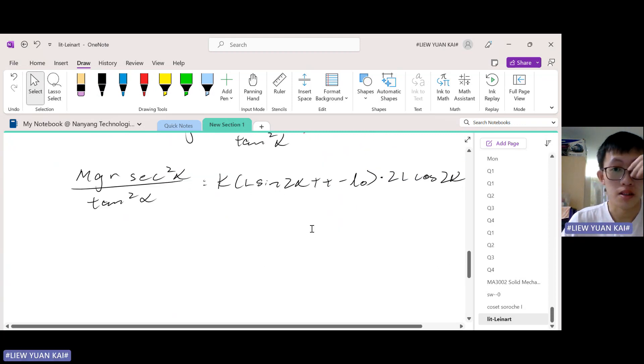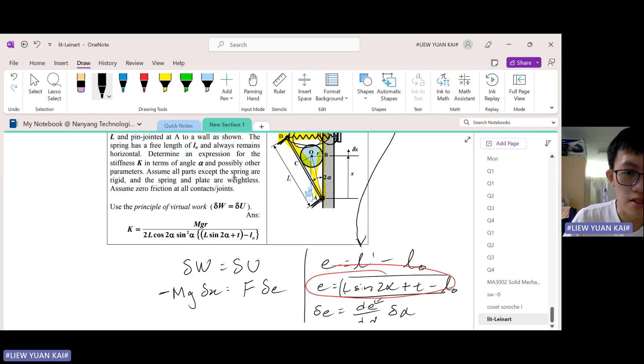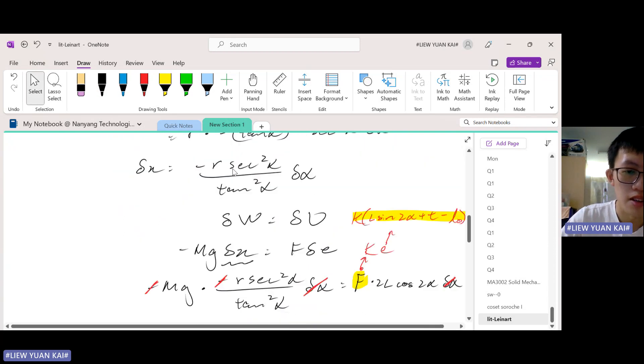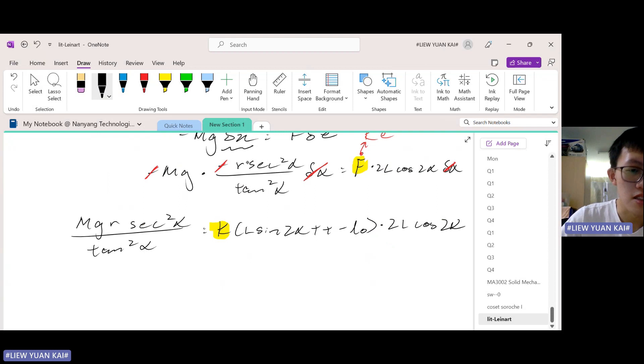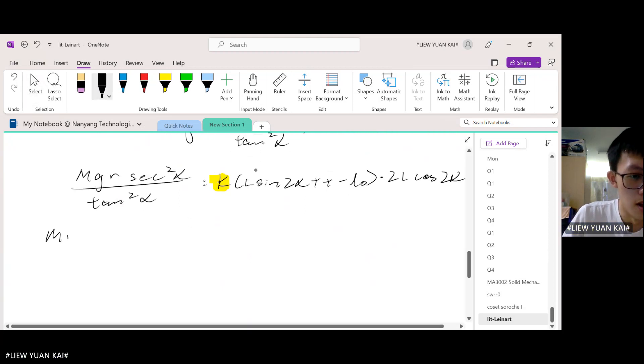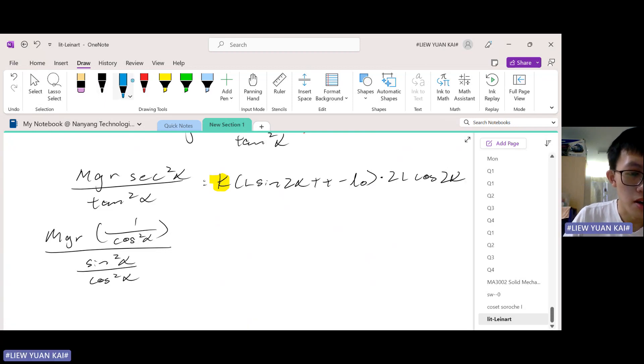So now we have to make k the subject because that's what we want. Let us neaten this side up a bit. So in the solution they gave us, they expressed it in terms of cosine and sine. There's no secant or tangent appearing. So we have to change secant to cosine and sine, respectively. So secant is actually 1 over cos. Tangent is actually sine over cos. So both the top and the bottom have 1 over cos squared, so I can remove this and this.